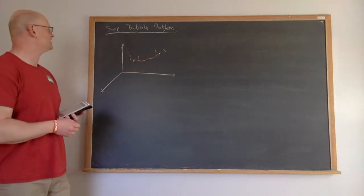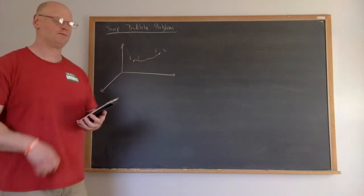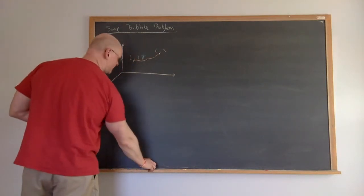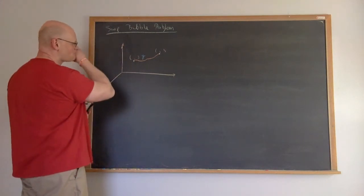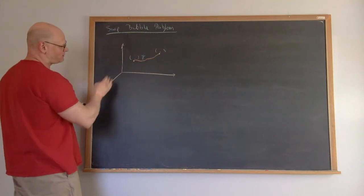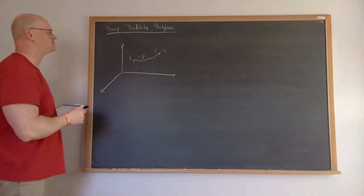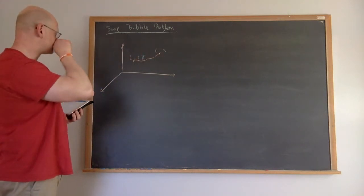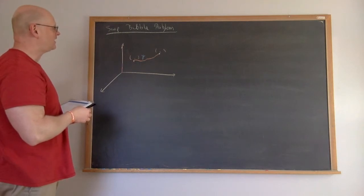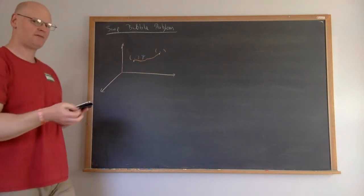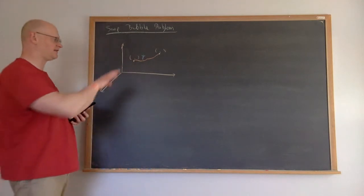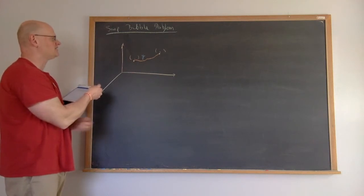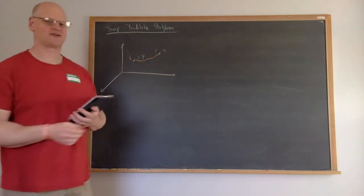Our last problem is what's known as the soap bubble problem. We have a curve y which depends on x, which we're going to rotate about a particular axis that is coplanar to these points. We can rotate it any way we want, as long as that axis is coplanar. We want to minimize the amount of surface area generated by this rotation.